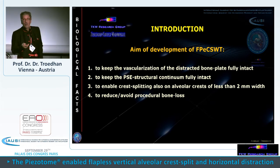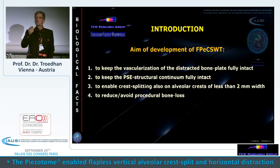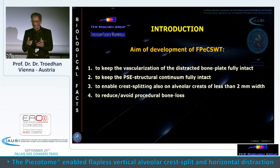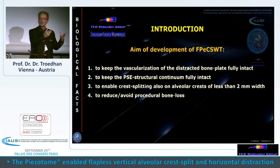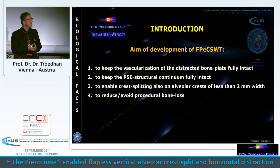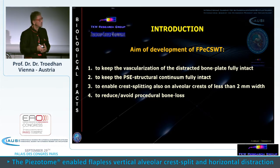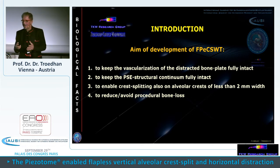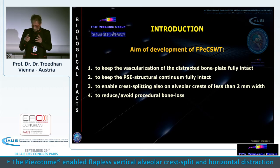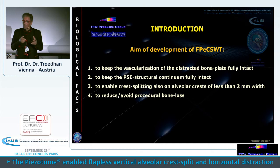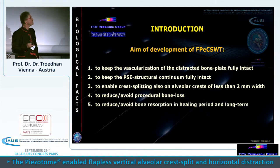Third, to enable crest splitting on alveolar crest widths of less than 2 mm — with current instruments it's almost impossible beyond 3 mm width. We were able to narrow this down to 1 mm. Fourth, to reduce and avoid procedural bone loss. When using rotary instruments for bone surgery, you are destroying and removing the very bone you urgently need for implants. With piezotomes you have no procedural bone loss — you can work like a Swiss watchmaker with precision.